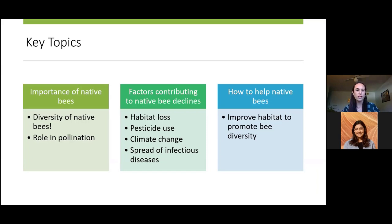There are three parts to my talk tonight. First, I'm going to introduce the diversity of native bees — they're really cool in how they look and the ecological roles they fill in pollination. Then we'll get into some of the key factors contributing to native bee declines, including habitat loss, pesticide use, climate change, and infectious disease. At the end, we'll close on a positive note with good news from my own research and key things we can do to promote bee diversity.